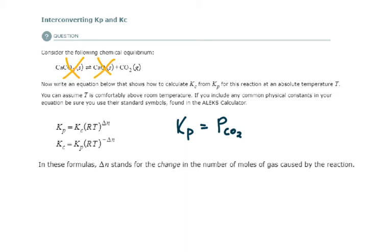So if I want to find Kc, I'm going to use this: Kc equals Kp times RT raised to the negative delta N.